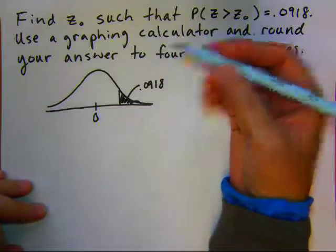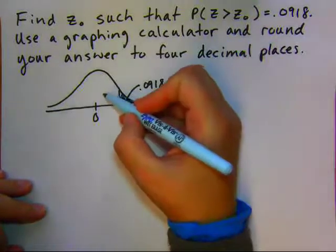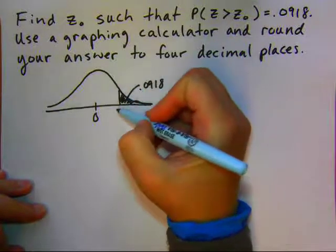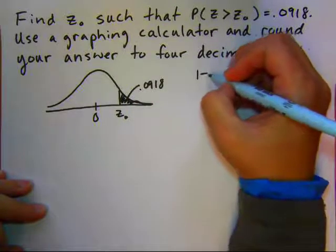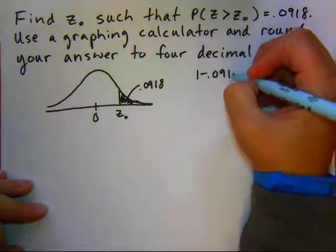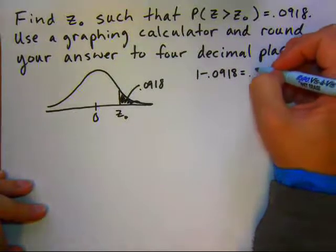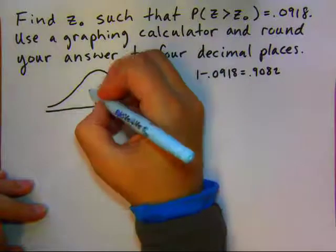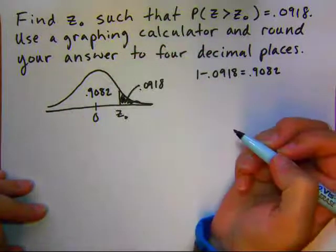Now your calculator, and this works the same on your tables or in Microsoft Excel, only gives you the area to the left of that unknown Z-score. So what we would do is take our complement rule. 1 minus 0.0918 is 0.9082. So all of this white area over here is 0.9082.